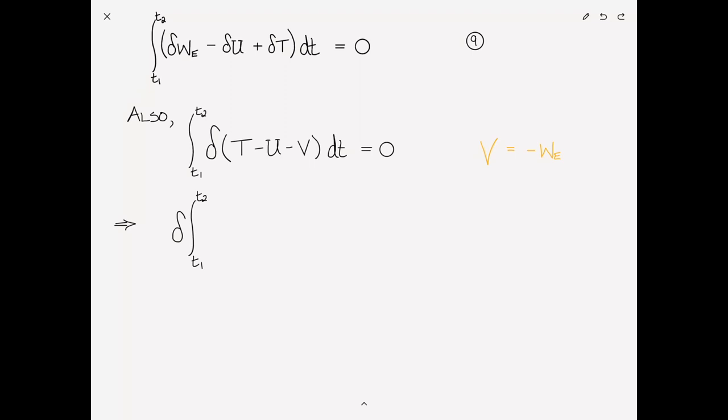So let's write this in a little more of a compact form. I'm going to copy equation nine over. And now I can rewrite this as the integral from T1 to T2 of the variation of T minus U minus V DT, and that's equal to zero, where I've made the substitution that V is equal to negative W E. And this is following the steps I took in the principle of minimum potential energy, where we choose to write the external virtual work in terms of a potential function V, where V is just the negative of the external work. And then we can treat it as part of the system potential. And this can be rewritten as the variation from T1 to T2 of T minus pi DT, that's equal to zero.